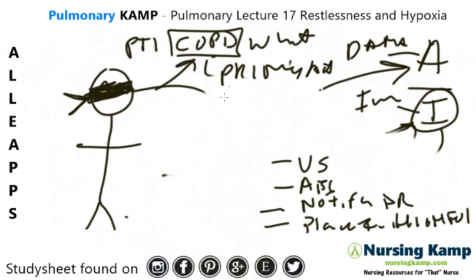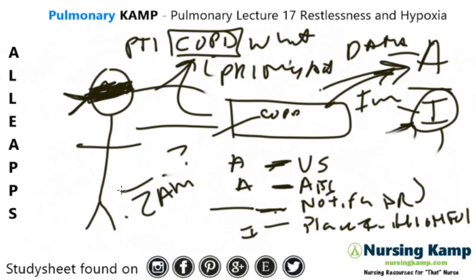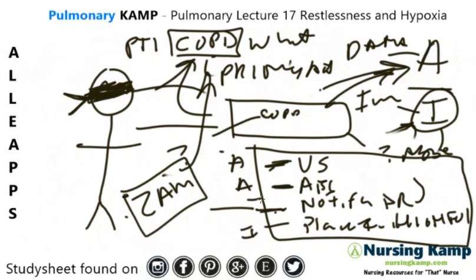COPD alone is not enough information to implement. What kind of COPD is it — emphysema, asthma, bronchitis? I don't know, so I need to assess. For the 'notify doctor' option, think about 2 a.m.: would you call a doctor at 2 a.m. and say 'I have a patient with COPD, what do you want me to do?' The doctor would ask 'what does the patient look like?' — that's assessment. If there's anything I can do in the room first before calling the doctor, I do that.